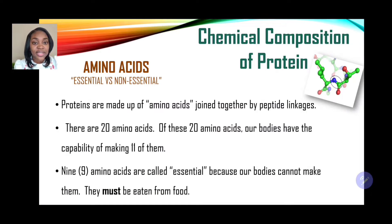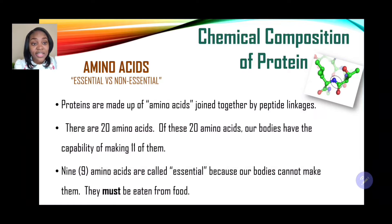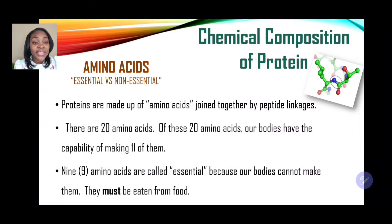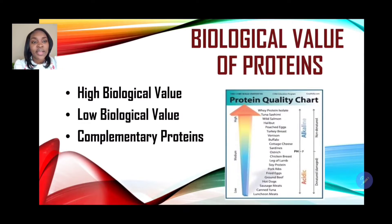There are two types of amino acids: essential and non-essential. Proteins are made up of amino acids joined together by peptide linkages. There are 20 amino acids in total; our bodies have the capability of making 11 of them. Therefore, nine amino acids are called essential because our bodies cannot make them — they must be obtained by eating food.